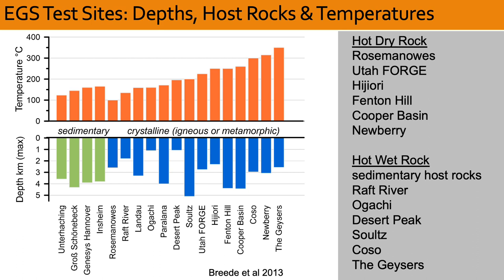More information about these test sites is shown here. The reservoirs have been developed in sedimentary, igneous, and metamorphic rock types. The ones in sedimentary rocks are all located in Germany, and they are represented by green-filled bars on the far left, with drill depths of three to four kilometers and reservoir temperatures between 120 and 165 degrees Celsius.